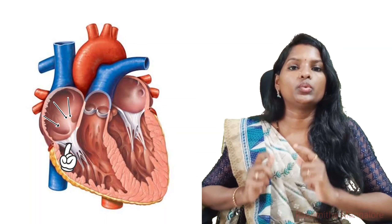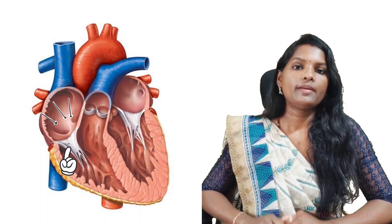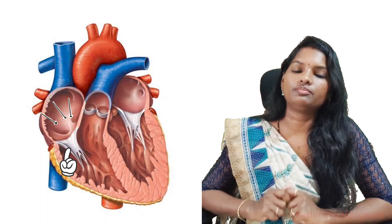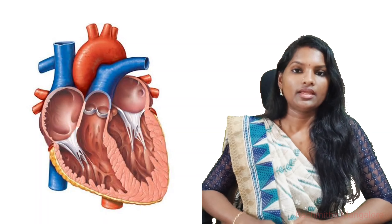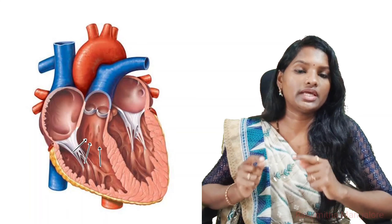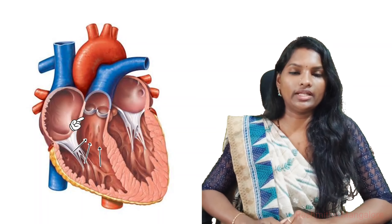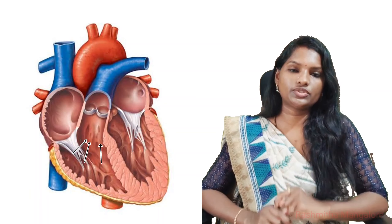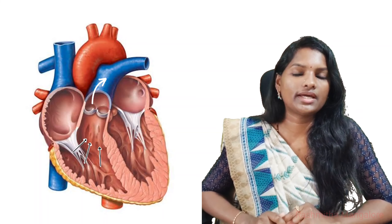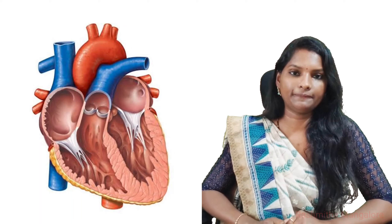The blood passes from the right atrium into the right ventricle through a valve called the tricuspid valve, which ensures the correct direction of blood flow. Once the ventricles contract, the deoxygenated blood from the right ventricle moves through the pulmonary valve and is transported to the lungs through the pulmonary artery.